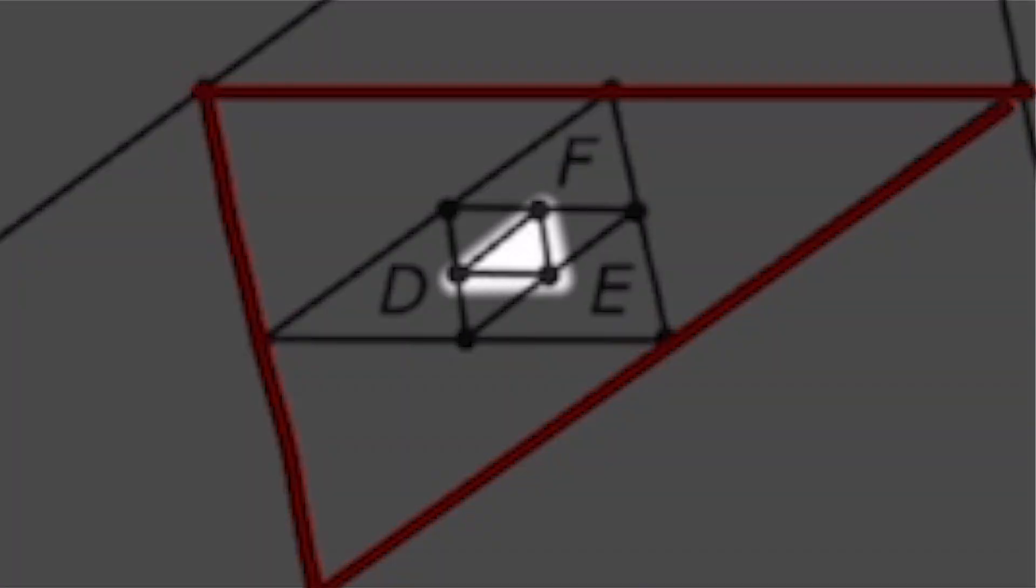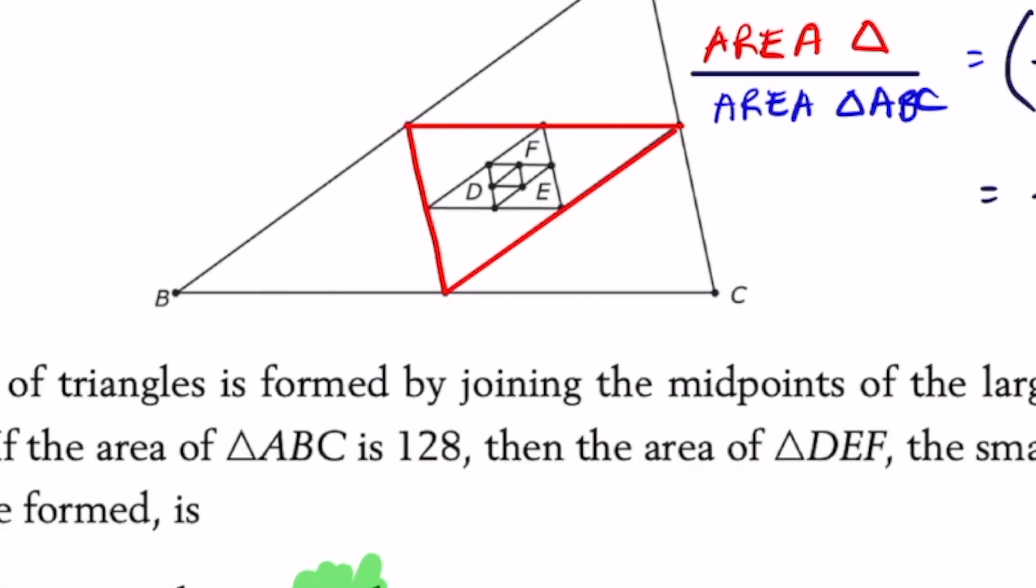And to finally find triangle DEF's area, there's going to be one fourth of two, which equals one half. That is going to be letter choice C.